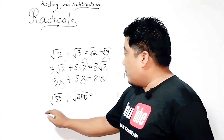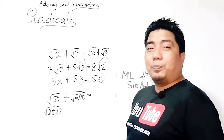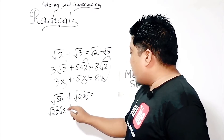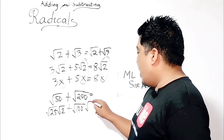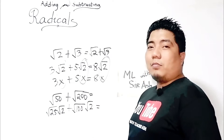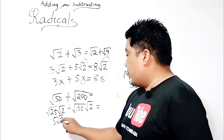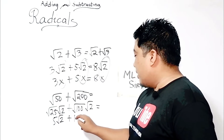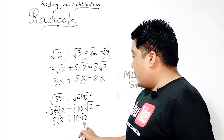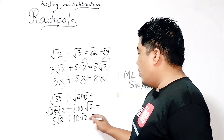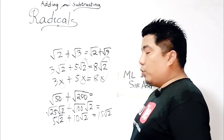The square root of 50 can be simplified to square root of 25 times square root of 2. While the square root of 200 can be simplified by the square root of 100 times the square root of 2. If we simplify, this will become 5 square root of 2, and this will become 10 square root of 2. In this scenario, you already have the same terms, so 5 plus 10 gives us 15 square root of 2.